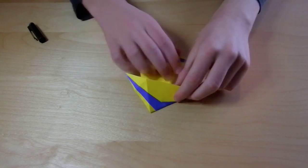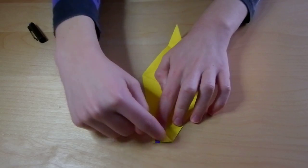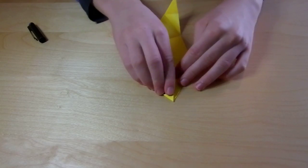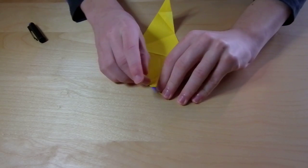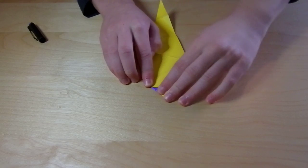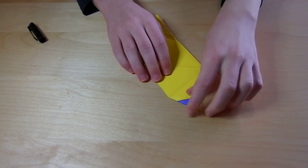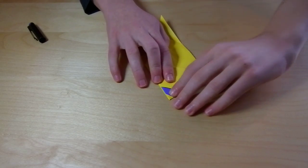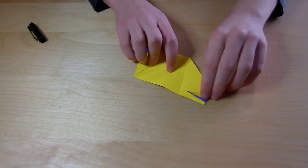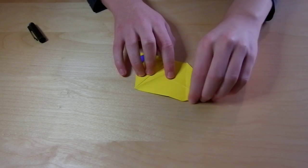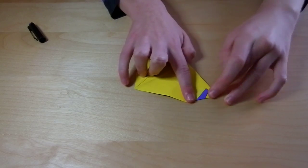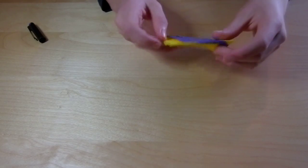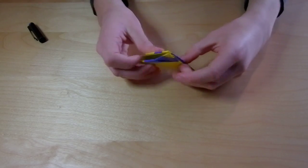Do the same thing here. Then turn it over and unfold this. Now fold this in, fold it back. Fold it back again. Do the same thing here. And fold it in half here.